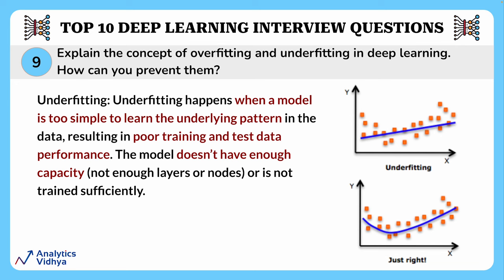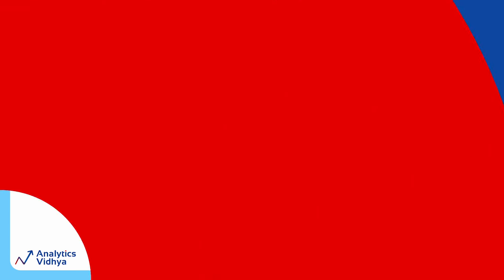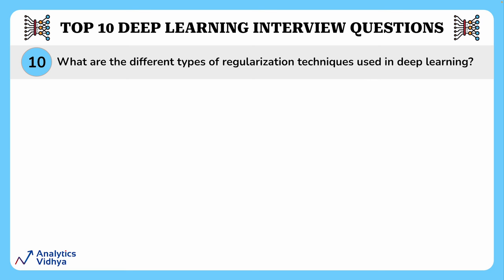Underfitting occurs when a model is too simple to learn the underlying patterns in data, resulting in poor performance on both training and test data. This happens when the model doesn't have enough capacity — not enough layers or nodes — or is not trained sufficiently. Underfitting can be prevented by increasing model complexity, training the model longer, feature engineering, and reducing regularization.